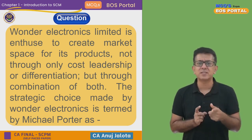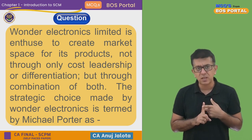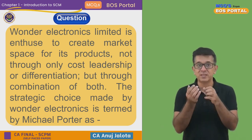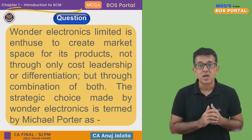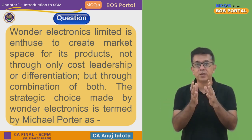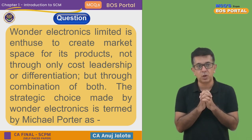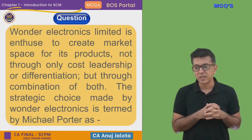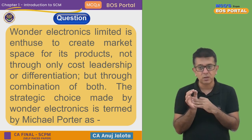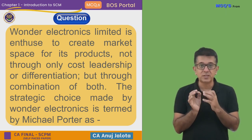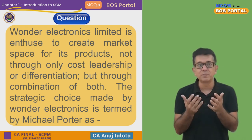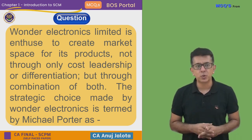Wonder Electronics wants one strategy of cost leadership — try to have the least cost and sell products at the least price — but at the same time sell products which are differentiated compared to the competition. It's something like a Mi company that sells products at the cheapest possible price but with the quality of Apple. So the strategic choice made by Wonder Electronics is termed by Michael Porter as — what?